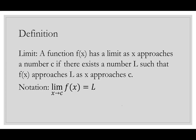The definition of a limit: a function f of x has a limit as x approaches a number c if there exists a number L such that f of x approaches L as x approaches c. A couple of things that are really important — L is a number, c is a number, meaning each is a single value. I'm only going toward one number c and receiving one number L: one input, one output.